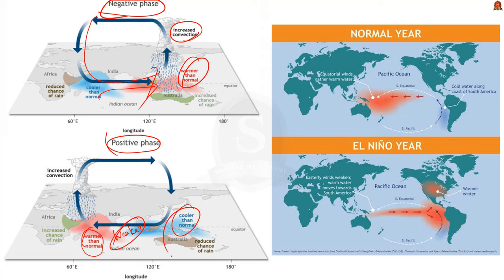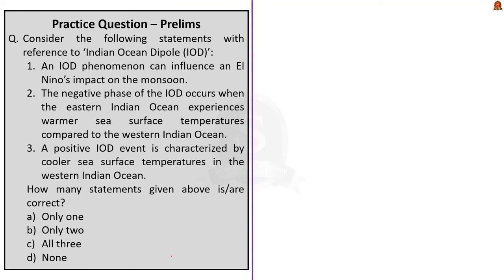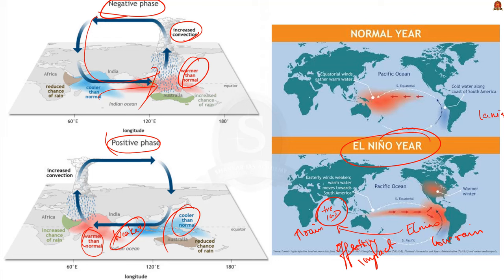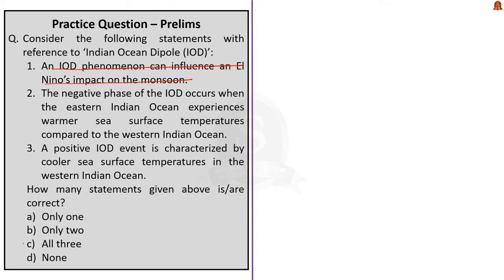Coming back to the question: the first statement says an IOD phenomenon can influence an El Niño's impact on the monsoon — this is correct. A positive IOD event often develops during El Niño, while a negative IOD is sometimes associated with La Niña. India experiences below-average rainfall during most El Niño years, but when a positive IOD combines with El Niño, they exert an offsetting impact — El Niño tends to lower rainfall while a positive IOD increases it. So even during El Niño years, if a positive IOD is present, India will receive good rainfall. The correct answer is Option B — only two statements.